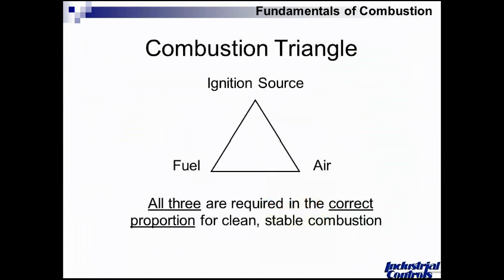Going back to the basics, we're going to explore combustion. That involves the discussion of the combustion triangle. To have a complete triangle, we need three sides. At the upper apex, we have some sort of an ignition source — something that triggers our reaction, something that's hot. Lower left, we have some type of fuel, carbon-based: it could be paper, rubbish, natural gas, oil, coal — anything with free carbon. On the right-hand side, we have air, either the air we breathe, pure oxygen, or some combination thereof. All three are required in the right proportions for clean, stable combustion.